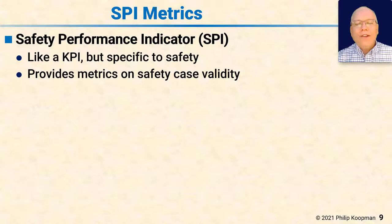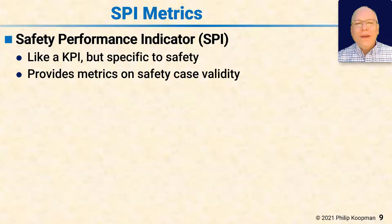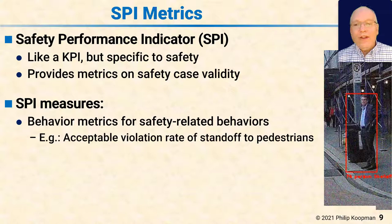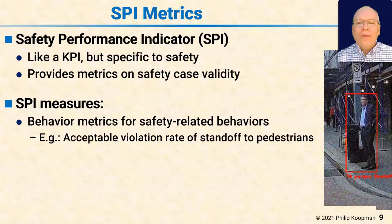4600 also has a section on metrics — safety performance indicators, or SPIs. They're similar to KPIs but specific to safety, and they provide metrics on the validity of the safety case over the system lifecycle. As an example, if you have a pedestrian about to step into a road, you need a safety metric for how close you're allowed to pass to a pedestrian — it's context-dependent based on area, local customs, and vehicle speed. The SPI would track how often you encroach upon a pedestrian closer than you really should. SPIs differ from KPIs in that KPIs are about average performance, whereas SPIs are about whether you're crossing a line that makes the system unsafe.